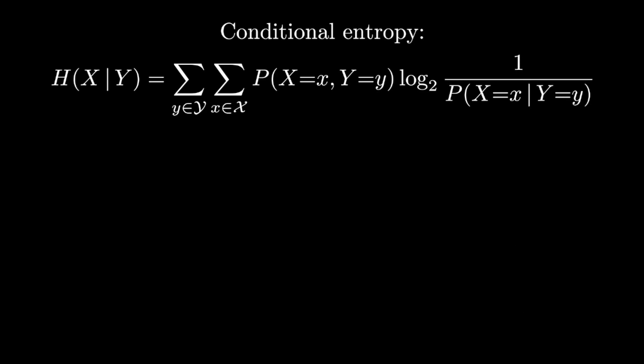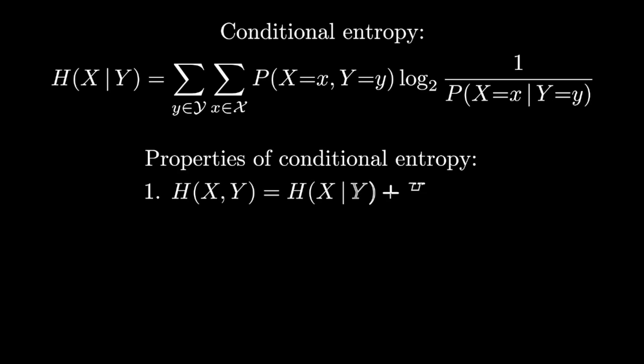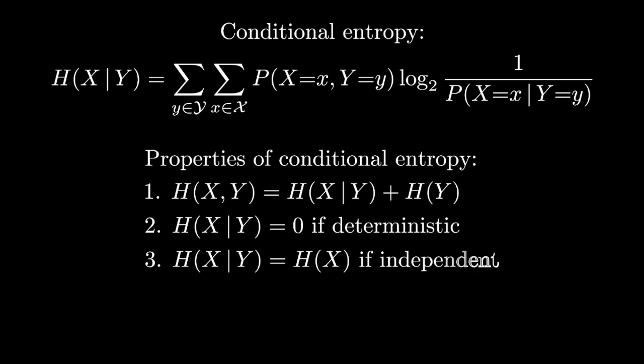There are a couple of properties that are worth keeping in mind when you're thinking about conditional entropy. The first is that the joint entropy of X and Y decomposes into the conditional entropy of X given Y and the marginal entropy of Y. And of course, by symmetry, this would also work out with the conditional entropy of Y given X and the marginal entropy of X. Another good thing to think about is that the conditional entropy of X given Y is zero if X is completely determined by Y in a deterministic way. And then, of course, if there's no connection between X and Y—that is, they're independent random variables—then the conditional entropy of X given Y is just the marginal entropy of X.